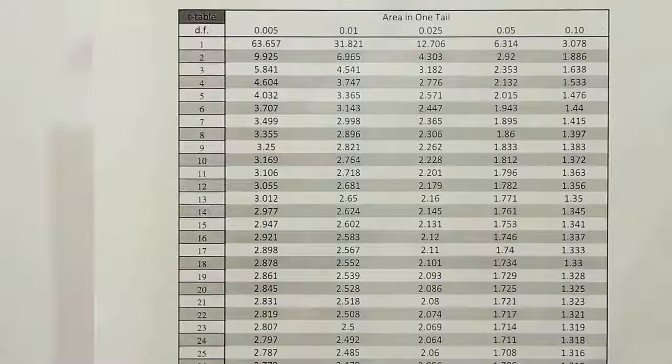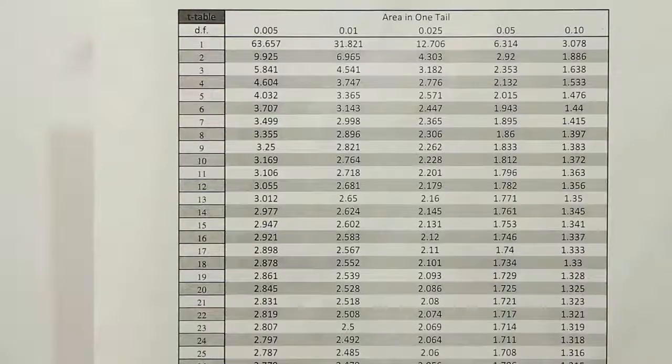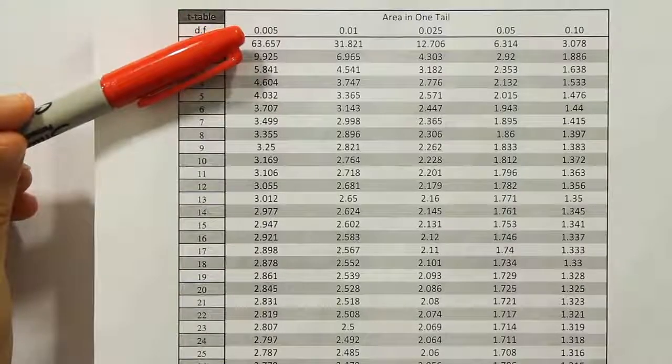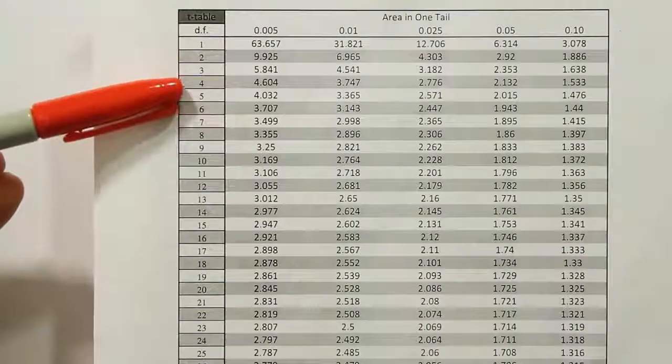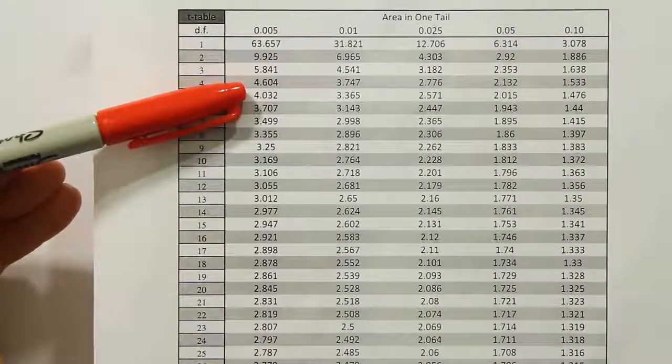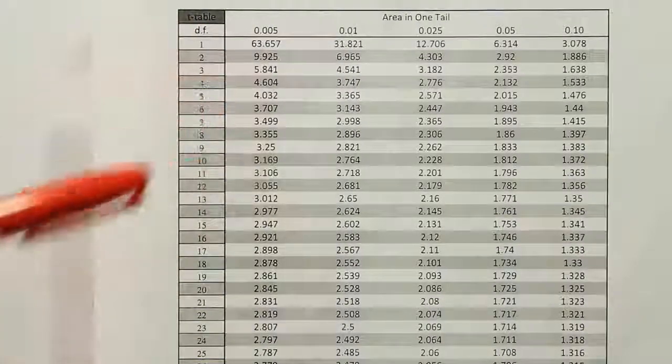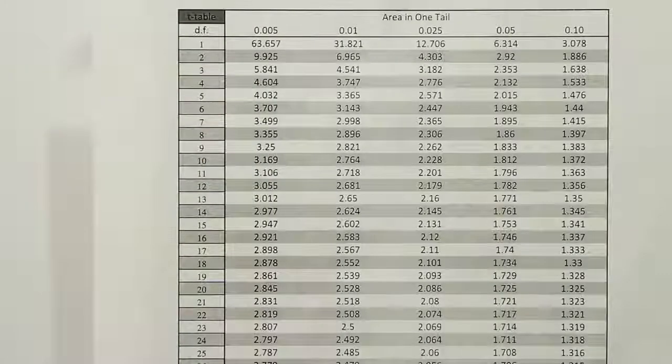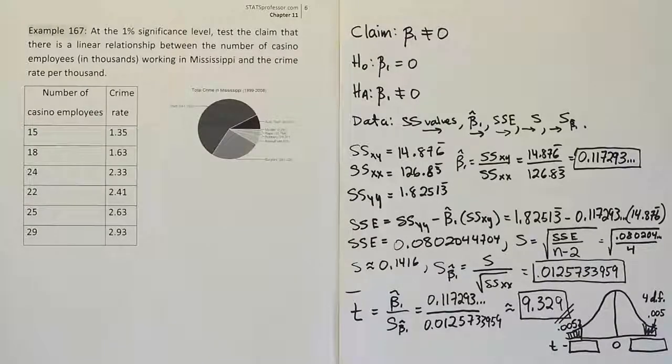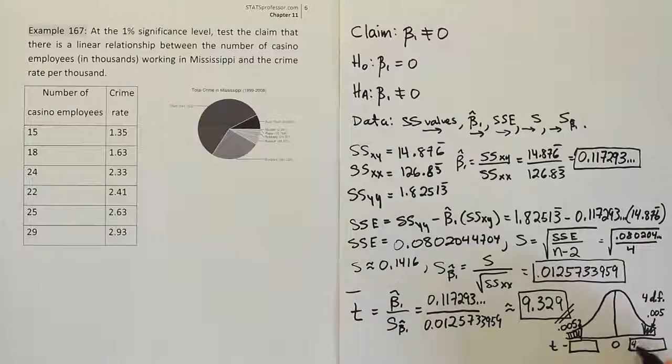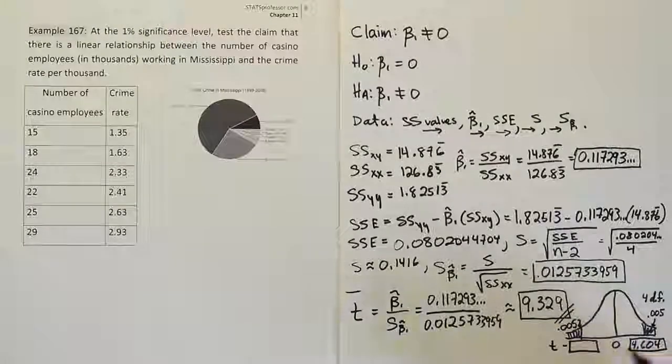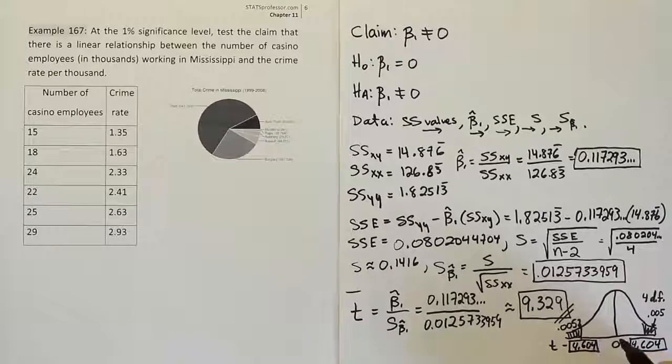So 4 degrees of freedom, 0.005 as our value. Let's go to our t-table and figure out what our critical values are. Okay, so we're in the 0.005 column here. And we're going down until we see 4 degrees of freedom. 4 degrees of freedom gives us 4.604. So we found our answer to be 4.604. So it'll be 4.604 and then negative 4.604. So we have two critical values.